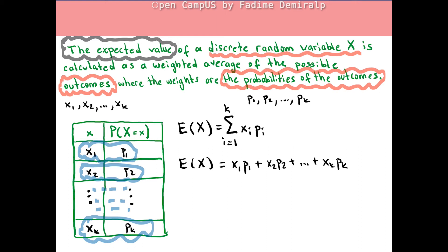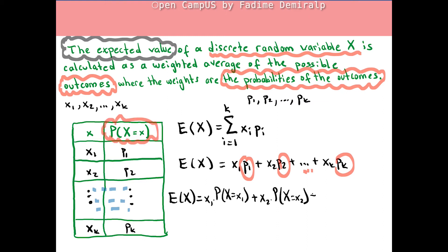Another notation you can see around for the formula of expectation could be the one involving this probability notation as the outcome probability. Instead of p, we can rewrite the formula by replacing each p with this notation. Note that μₓ could be used instead of E(X).